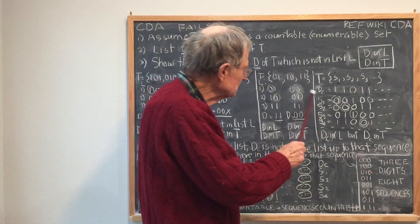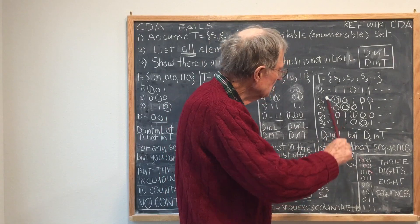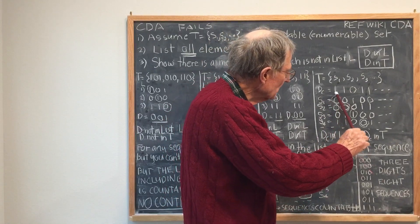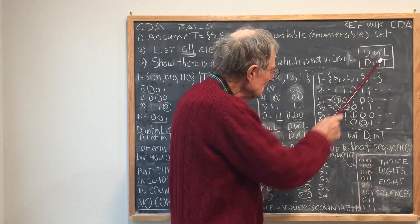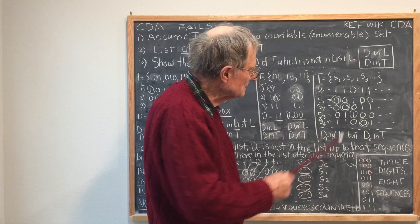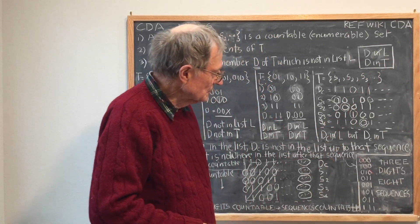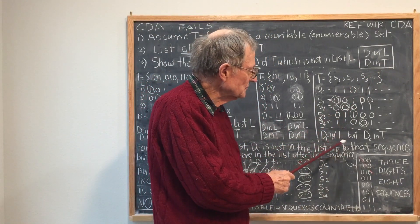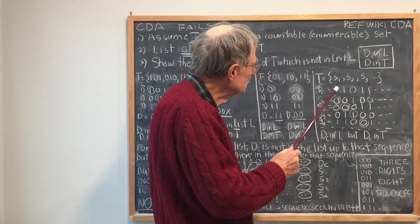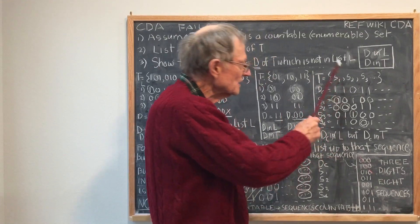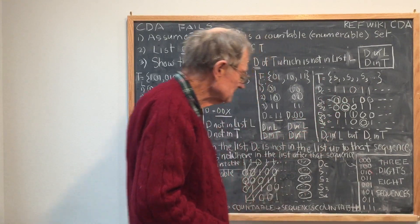On the other hand, the way I constructed D is as an infinite binary sequence, and so therefore it's in T — it's in the original set. So I've arrived at a contradiction by assuming T was countable. Therefore, the conclusion is T is uncountable.